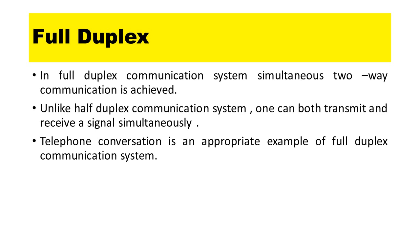In a full duplex communication system, simultaneous two-way communication is achieved. Unlike half duplex, one can both transmit and receive a signal simultaneously. A telephone conversation is an appropriate example of a full duplex communication system.